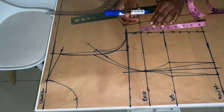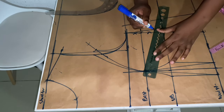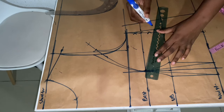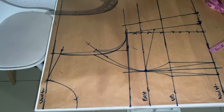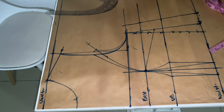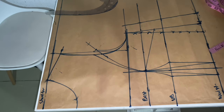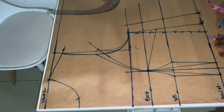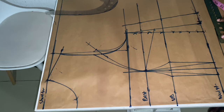Now I'm doing my bust dart. I'm coming down by two inches and ruling it to my bust point. The reason I'm coming down by two inches is because the difference between the front and back shoulder-to-waist is two inches. The bust dart gives the bodice more shape and a more fitted look — I recommend always doing your bust dart. I'm adding one inch allowance at the bottom of my pattern and ruling it out.